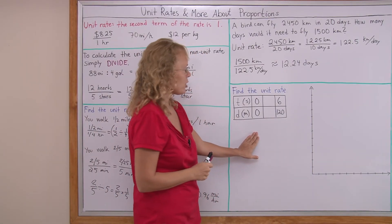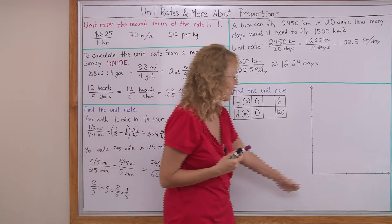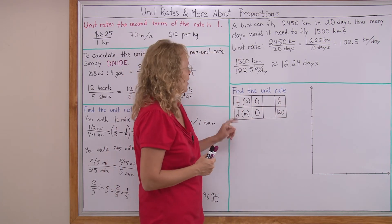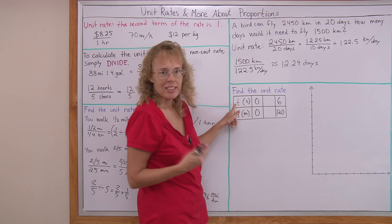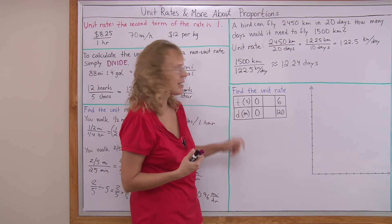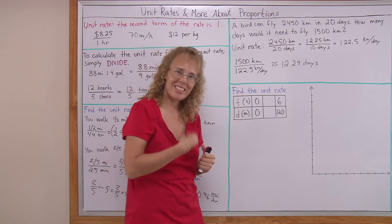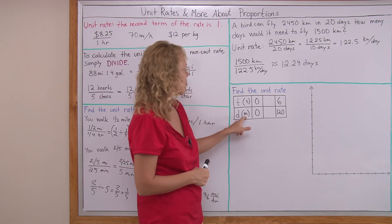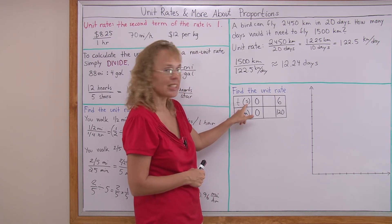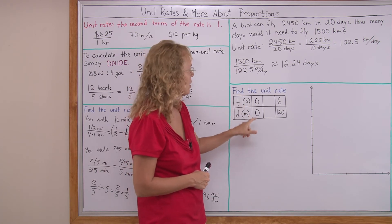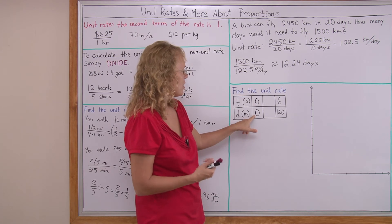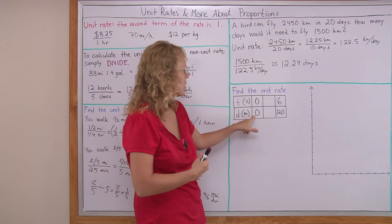Here, find the unit rate first of all. Then we're going to plot something. We're going to write an equation. Find the unit rate. T means time. D means distance. We are back to the distance and time and speed. Distance is in meters. Time is measured in seconds. At zero seconds, there's no movement, the distance is zero.